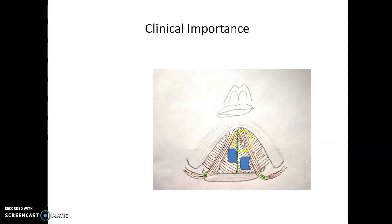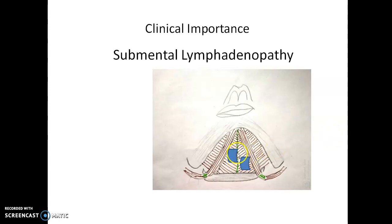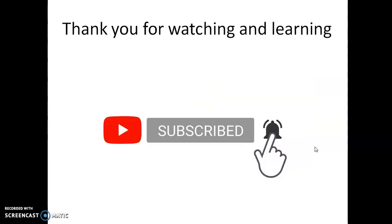For clinical importance: the submental lymph nodes, which are one or two in number, become enlarged whenever there is infection of the gums of the lower four incisors, the tip of the tongue, the median portion of the lower lip, or the chin area. This enlargement causes swelling just beneath the chin, making the chin appear like a double chin — a condition called submental lymphadenopathy. By knowing these lymph nodes, we must also examine the oral cavity. Simply seeing the swollen lymph node is not enough; we need to ask the patient to open their mouth and examine the tip of the tongue and the gums of the lower four incisor teeth to identify the exact site of the septic focus.